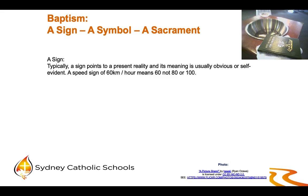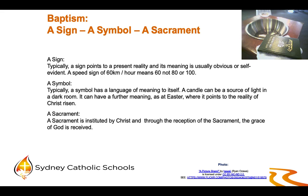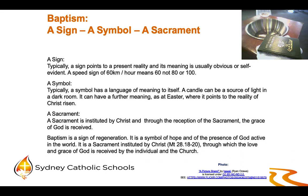A sign typically points to a present reality and its meaning is usually obvious or self-evident — a speed sign of 60 kilometres per hour means 60, not 80 or 100. A symbol typically has a language of meaning to itself; a candle can be a source of light in a dark room, but it can also have further meaning, as at Easter where it points to the reality of Christ risen. A sacrament is instituted by Christ and through the reception of the sacrament the grace of God is received. So baptism is a sign of regeneration, a symbol of hope and of the presence of God active in the world, and a sacrament instituted by Christ in Matthew 28 through which the love and grace of God is received by the individual and the church.